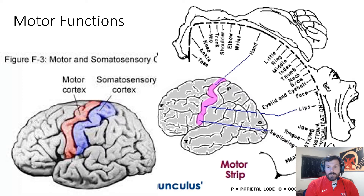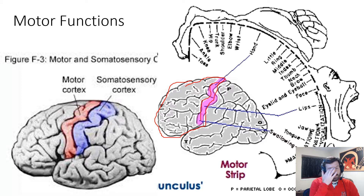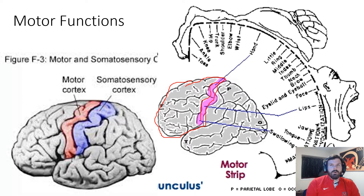What we're going to talk about is the motor strip. The motor strip is in the frontal lobe of the brain, in the very back part of the frontal lobe, and what it does is help control voluntary movement. The more neural connections you have in a certain area, the more you're able to do with that thing.